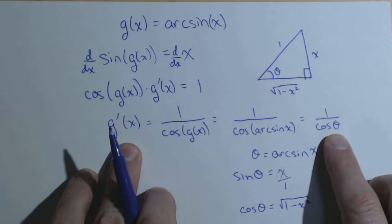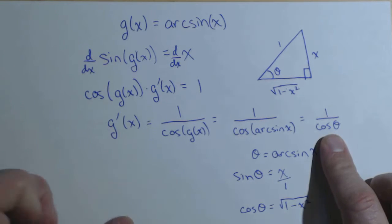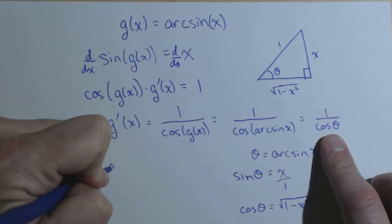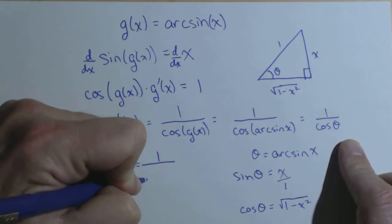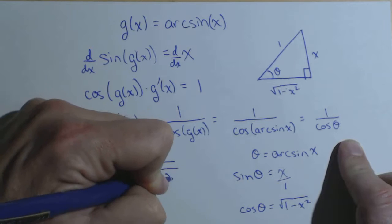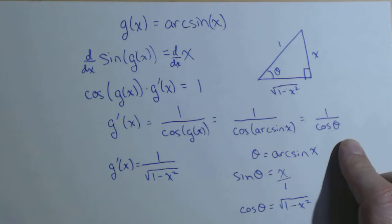Well, remember what we found our g prime of x was equal to is one over cosine of theta. So g prime of x equals one over the square root of one minus x squared. And then we've derived the derivative for arc sine of x.